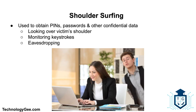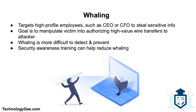Next we have shoulder surfing. This is a type of social engineering technique used to obtain information such as personal identification numbers, passwords, and other confidential data by looking over the victim's shoulder — either from keystrokes on the device or sensitive information being spoken and heard, which is also known as eavesdropping.